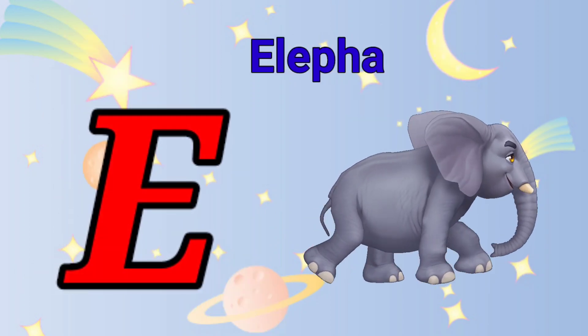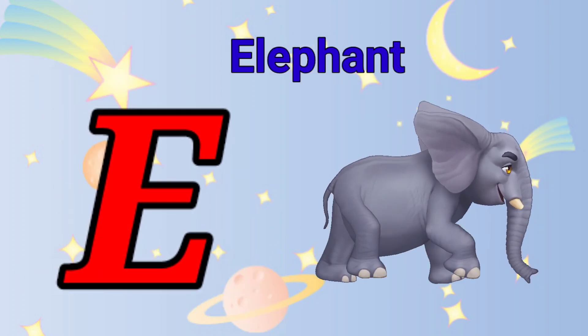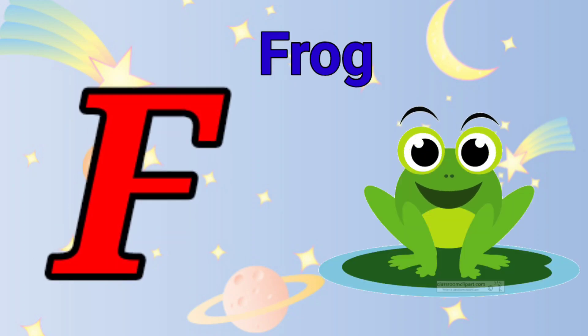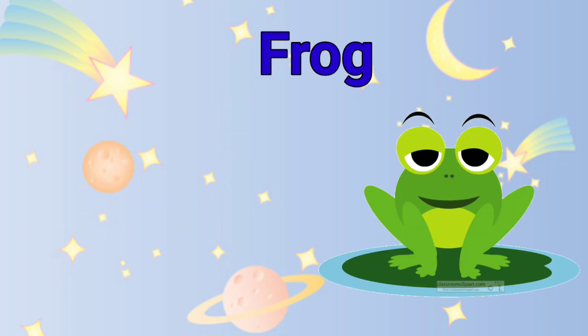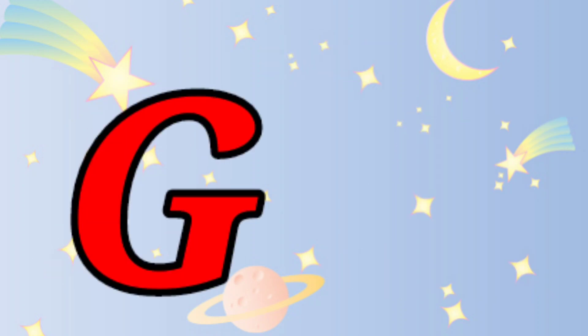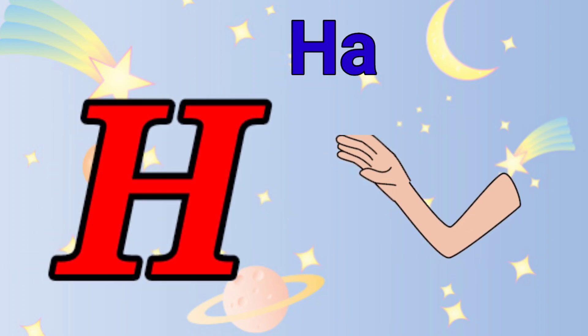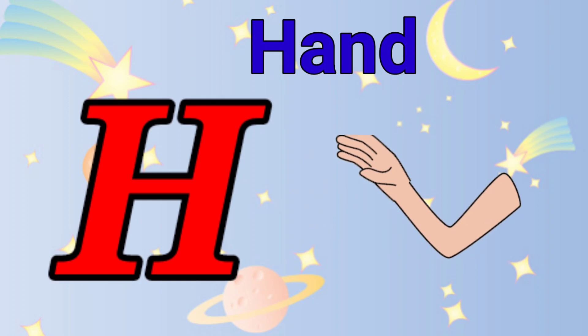E is for elephant, e-e-elephant. F is for frog, f-f-frog. G is for goat, g-g-goat. H is for hand, a-a-hand.